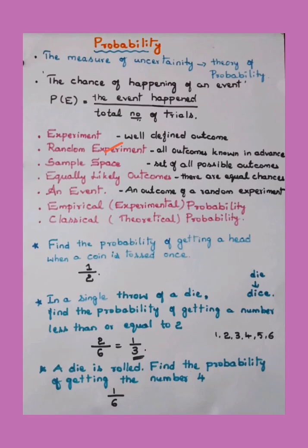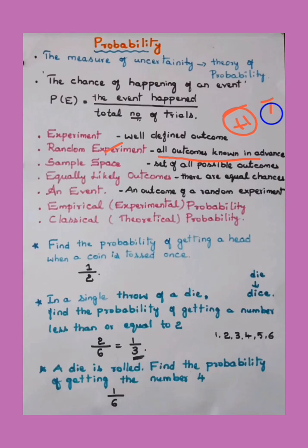Moving on to random experiment — it means all outcomes are known in advance. For example, when you toss a coin, we know that either you will get head or tail as the outcome. This is already known in advance, so that is called a random experiment.